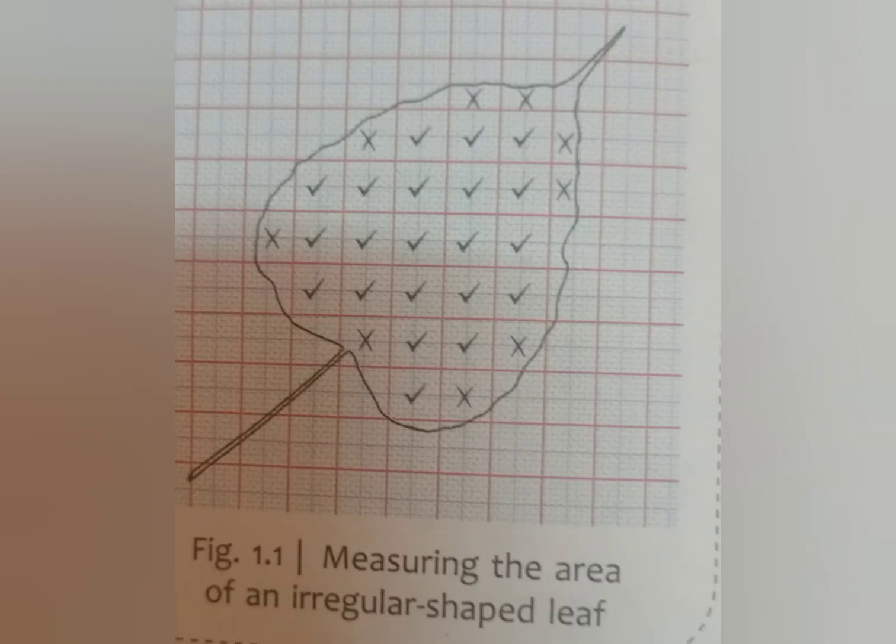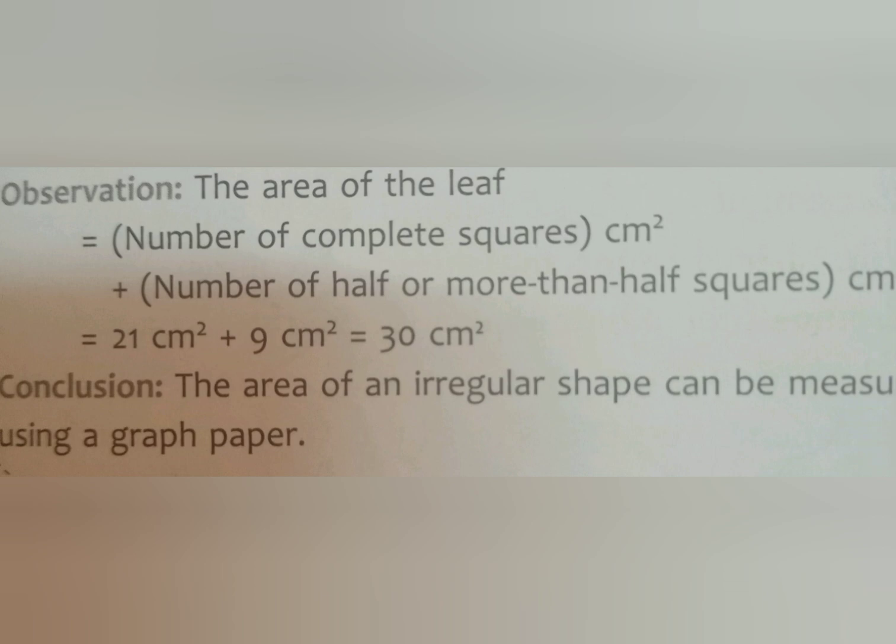Now, measuring the area of irregular shapes. To measure the area of an irregularly shaped object like a leaf, we use graph paper. Place the leaf on the graph paper and trace its outline with a pencil. Now count the number of complete squares enclosed by the leaf plus the number of half or more than half squares. In this way we measure the area of irregularly shaped objects like a leaf using graph paper.